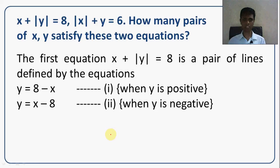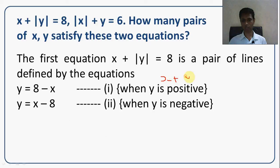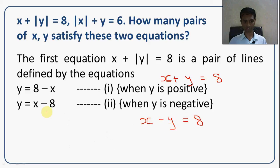Taking the first equation x plus mod y equals 8, I can break this into two lines: one when y is positive and one when y is negative. When y is positive, this becomes x plus y equals 8, or y equals 8 minus x. When y is negative, this becomes x minus y equals 8, or y equals x minus 8. So this equation is a combination of two straight lines.